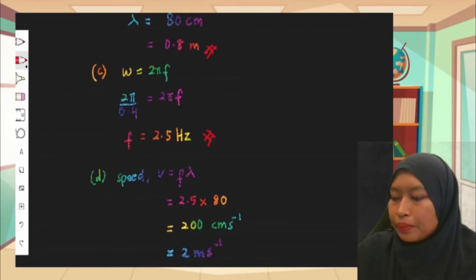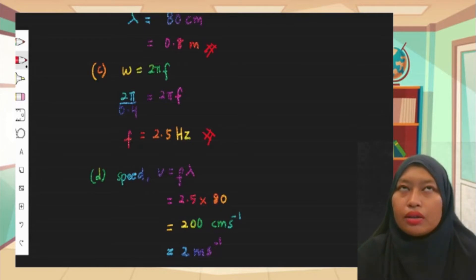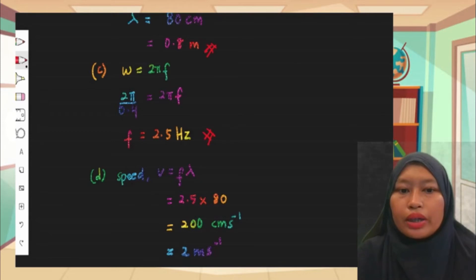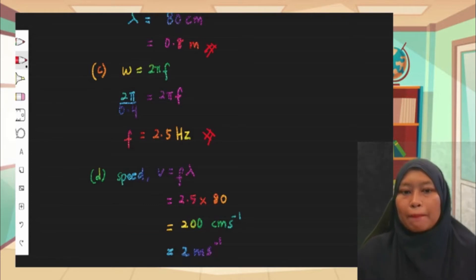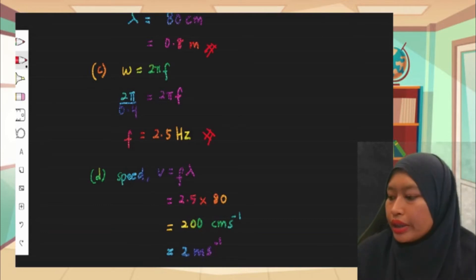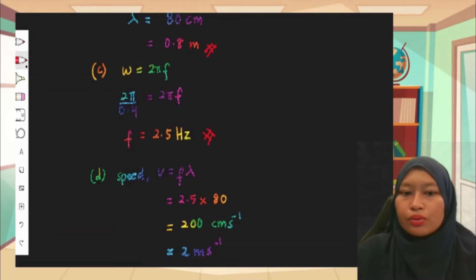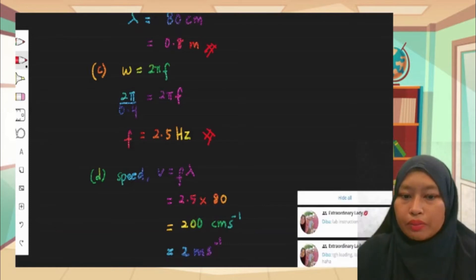For part d, the question asks for wave speed. There are two types of speed in this topic: vibrational speed for the particle, and wave speed for the wave itself. Since the question asks for wave speed, the formula to use is v = fλ. So 2.5 × 80 = 200 cm/s, which converts to 2 m/s.